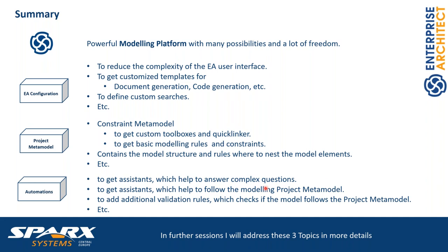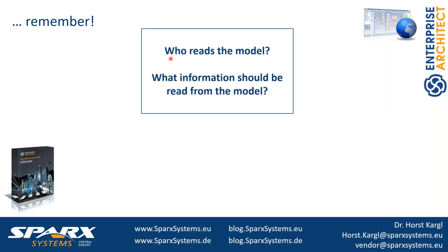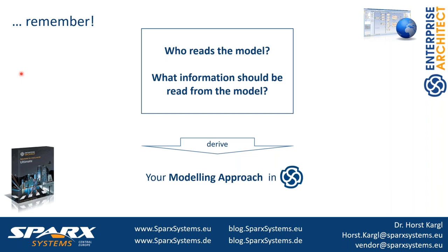This is one of the great possible configurations of Enterprise Architect — also a low-hanging fruit. If you have an idea of what you need, you can simply configure Enterprise Architect and already reduce a lot of the complexity, making it easier for your modelers to succeed with the modeling approach. Just remember: who reads the model and what information should be read. Then derive the project meta model and your modeling approach in Enterprise Architect.